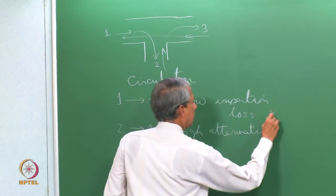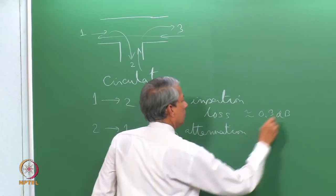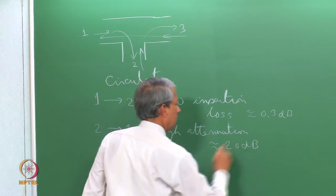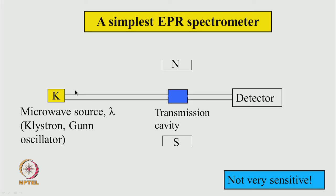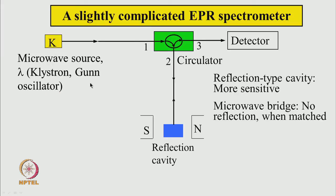The insertion loss could be as little as 0.3 dB, while the attenuation could be as high as 20 dB. Using this, we can make a spectrometer that allows microwave power to go from the klystron to the cavity. The klystron or GAN oscillator produces microwave power which enters port number 1, goes from 1 to 2 through the waveguide, and it goes to the cavity.